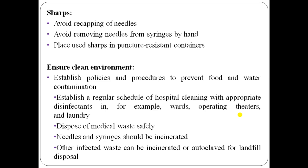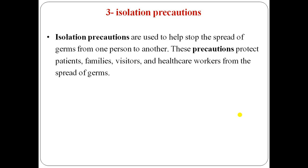Isolation precautions are used to help stop the spread of germs from one person to another, protecting patients, family, visitors, and healthcare workers. In hospital, if a patient has a communicable disease, they are placed in an isolation room to prevent the spread of infection from one person to another — similar to how during the COVID pandemic we were isolating from the public so that infection would not spread.